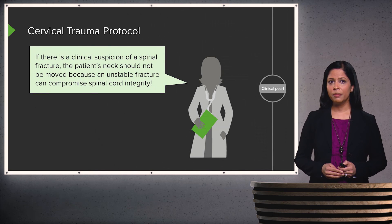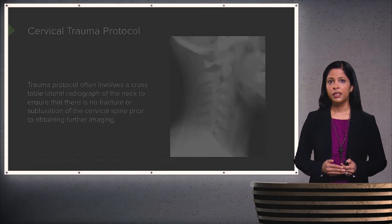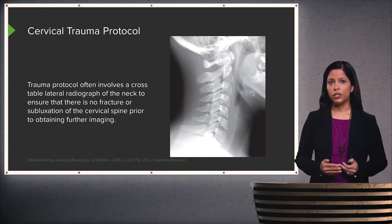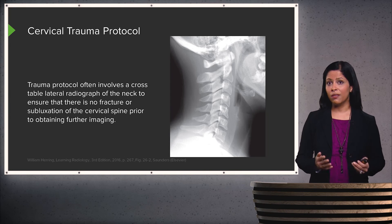When a patient comes in with a cervical spine trauma, if there's any kind of suspicion of a spinal fracture, the patient's neck should not be moved because an unstable fracture can compromise spinal cord integrity. The first thing that's done is a trauma protocol, which involves a cross-table lateral radiograph of the neck. This ensures that there's no fracture or subluxation of the cervical spine prior to obtaining further imaging, which may involve manipulation of the patient's neck.